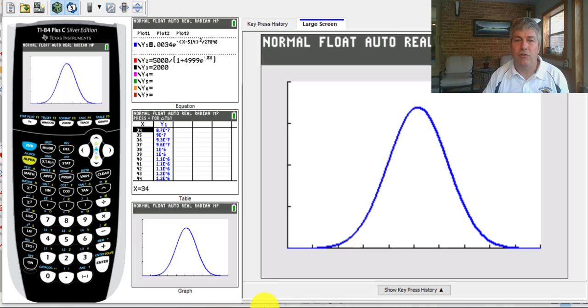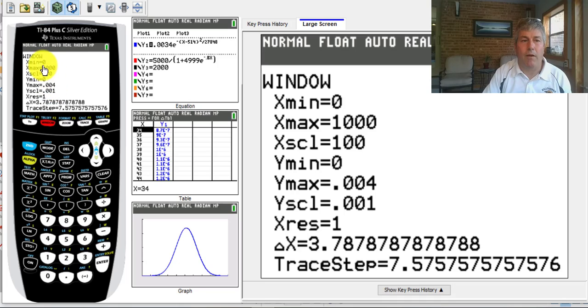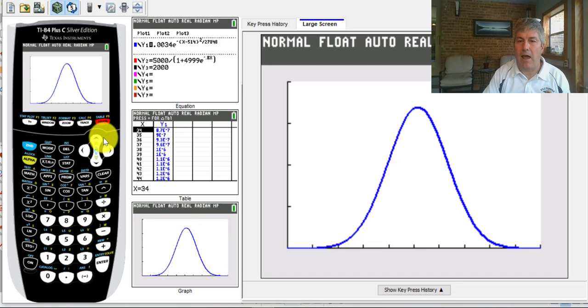So switching to our graphing calculator, I input my function into the graphing calculator and go ahead and set my window. So I set my x min to 0, my maximum of 1,000, and I count by 100s. And then my y min is 0, my y max is .004, and my scale is .001. And you can see here, I get a really nice graph of that normal distribution curve.